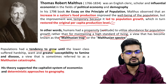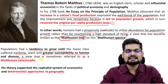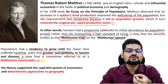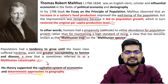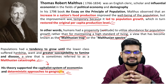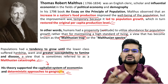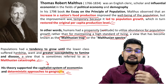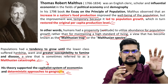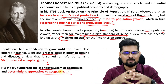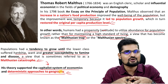Populations had a tendency to grow until the lower class suffered hardship, want, and greater susceptibility to famine and disease — this is basically the Malthusian view on catastrophe. His theory also supported the capitalist system of economics and deterministic approaches in geography, emphasizing the industrial mode of production and a class-conscious society. It is a deterministic theory: if one factor changes, it determines the other factor.